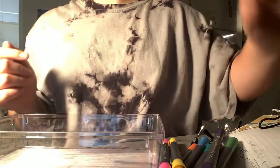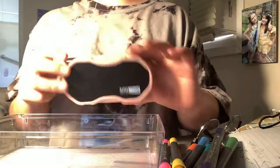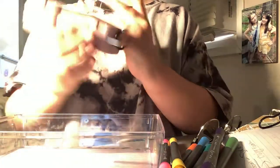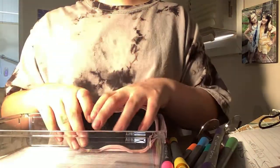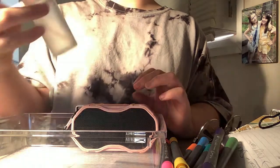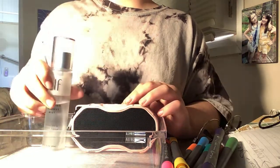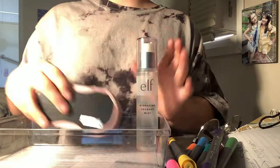First things first, I have this mini boom box here. It's blue and it does turn on. We'll put this in the back here. Then we have this Elf hydrating coconut mist. Put that also in the back. There's another one right here, and this in the back.